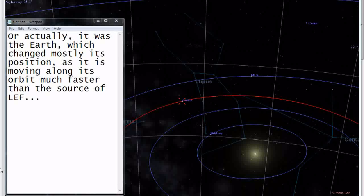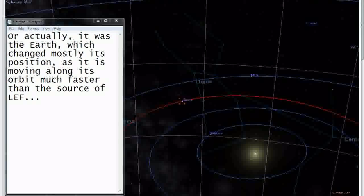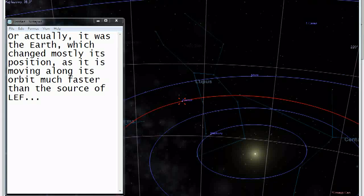Or actually, it was the Earth which changed mostly its position, as it is moving along its orbit much faster than the source of low energy field.